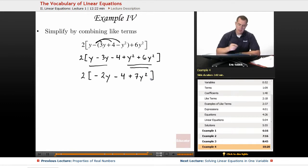Alright, that looks good. I'm going to go ahead and distribute my 2. It's not really going to help me combine any more like terms, but it'll definitely help me see my final results. So negative 4y minus 8 plus 14y squared.